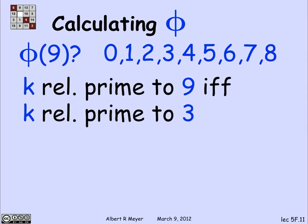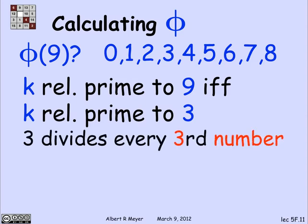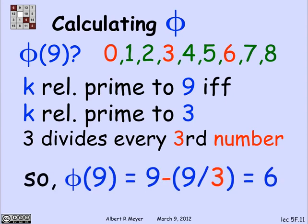Now which numbers in this interval are relatively prime to 3, or rather are not relatively prime to 3? Well, it's every third number that's divisible by 3. So those are the bad ones. If we subtract the bad ones, we're left with the good ones, the ones that are relatively prime. So phi of 9 is simply the set of all the numbers minus 1 third of 9, which is the bad ones, namely 6.